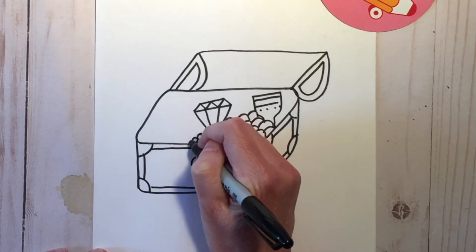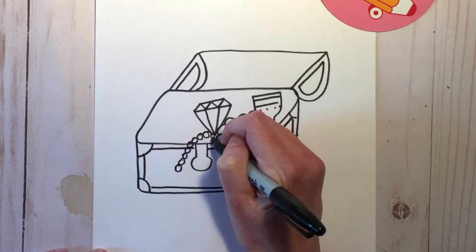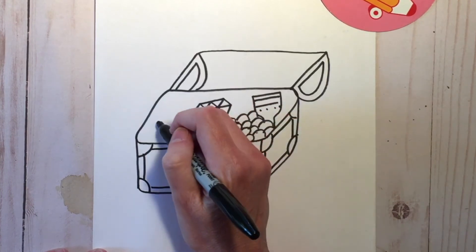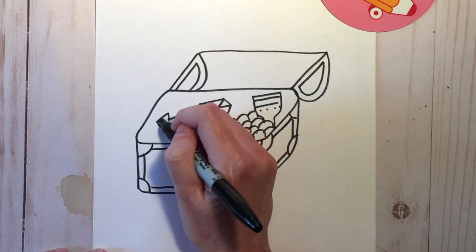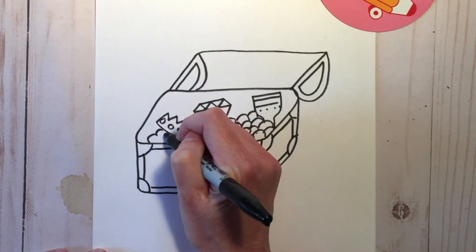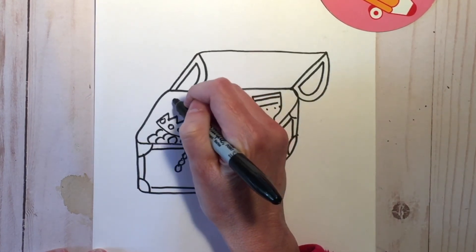I'm going to add some jewelry like a pearl necklace hanging out. I'm going to do a crown. And just fill it with any kind of precious things that you would like to put in your treasure box.